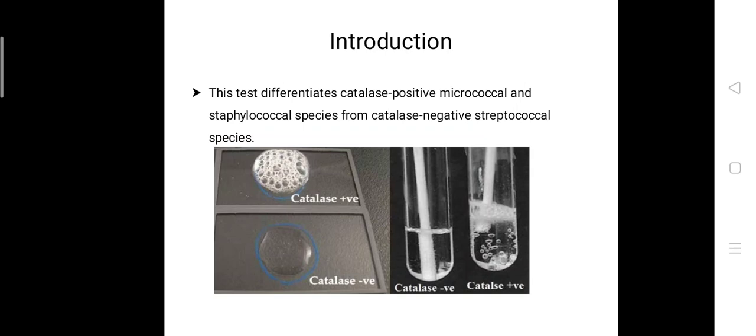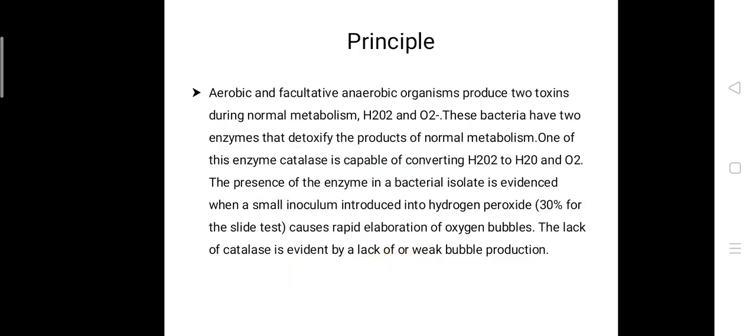Let's see the principle here. Aerobic and facultative anaerobic organisms produce two toxins during normal metabolism: hydrogen peroxide (H2O2) and superoxide radicals (O2). These bacteria have two enzymes that detoxify the products of normal metabolism.